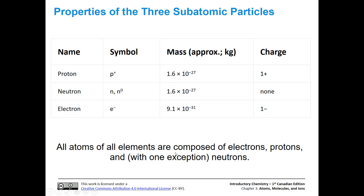Basically, all atoms of all elements are composed of electrons and protons. With one exception — there's one element that doesn't have neutrons — but otherwise they all have protons, electrons, and neutrons.